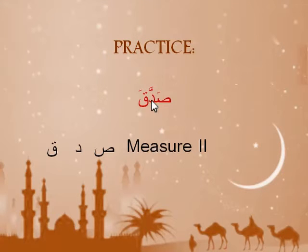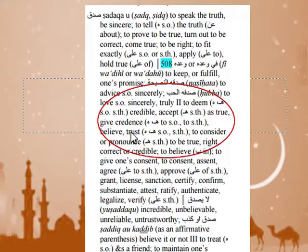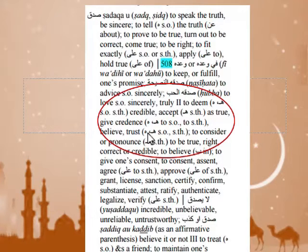Go back to the first one: sadaqa. By now you should recognize this is measure two of the root Sad-Dal-Qaf. Going to Hans-Wehr, we found the root and here's our measure two. Measure two means to deem something credible, to accept as true, give credence, believe, trust — believe to be true. Looking at the whole root: measure one means speak the truth, tell the truth, be correct. So this word means believe, but only in the very specific sense of believing someone is telling the truth — it's not interchangeable.